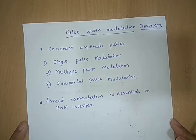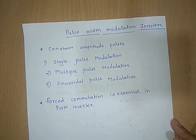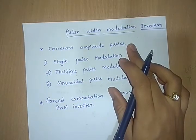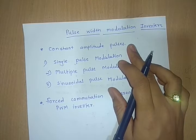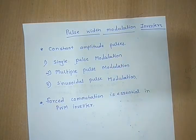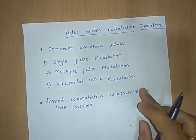Welcome to all of you. Today our discussion topic is Pulse Width Modulation Inverters. Nowadays in many industrial applications the PWM inverters are widely used. The PWM techniques are characterized by constant amplitude pulses. The width of these pulses is modulated to obtain inverter output voltage control and to reduce the harmonic content present in the output voltage. Different PWM techniques are listed below.